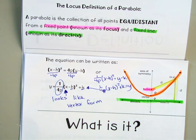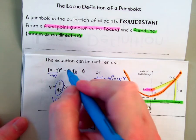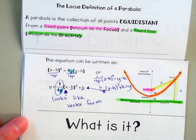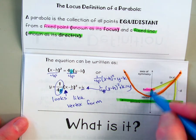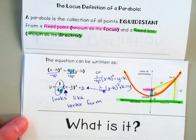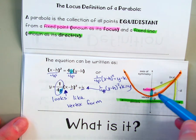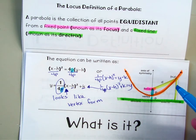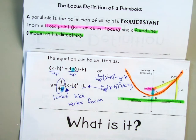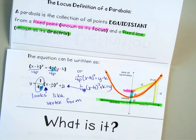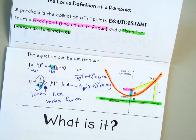All the variables are familiar: x is x, y is y, h and k are the coordinates of your vertex. The new one is the letter p. No matter which form you look at, you have that letter p there. p is the distance between your vertex and your focus, or between your vertex and your directrix. This distance is always the same because the parabola is equidistant from both. That is the locus definition — another way of writing the equation of your parabola, taking into account the focus and directrix.